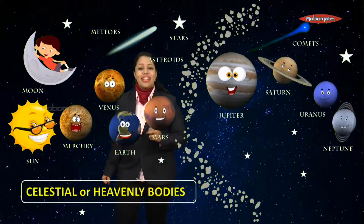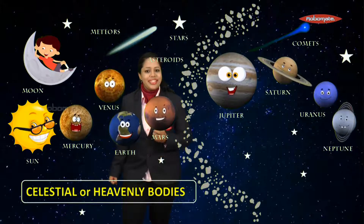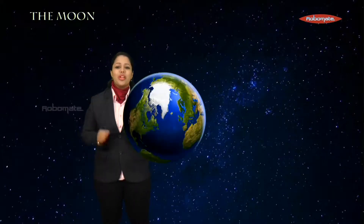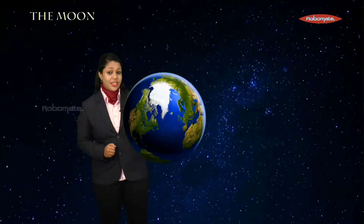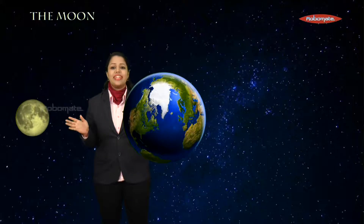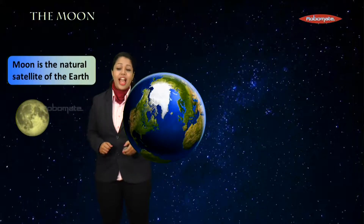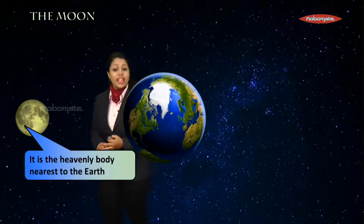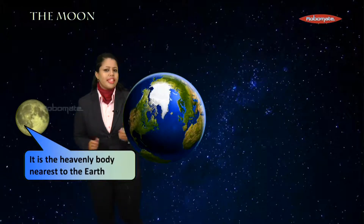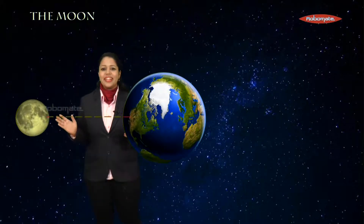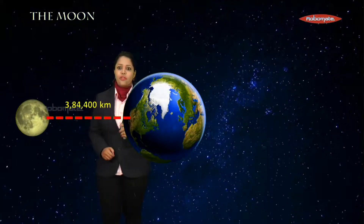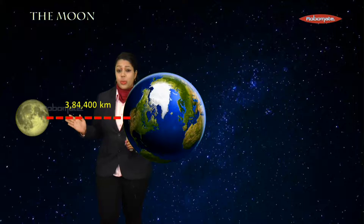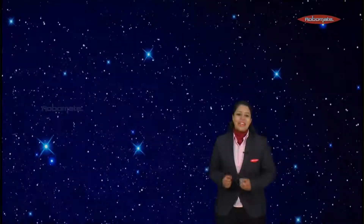Now let's start with the Moon. We all know that the Moon is the natural satellite of Earth, and it is also the heavenly body nearest to the Earth. The distance between the Moon and the Earth is three lakh eighty-four thousand four hundred kilometers.